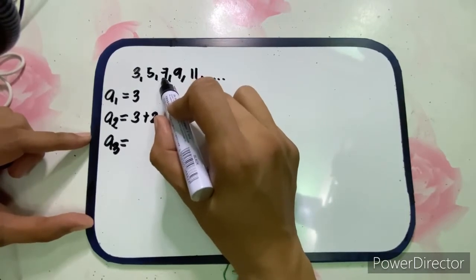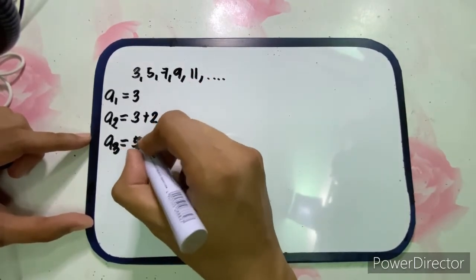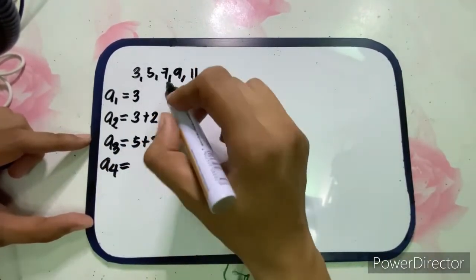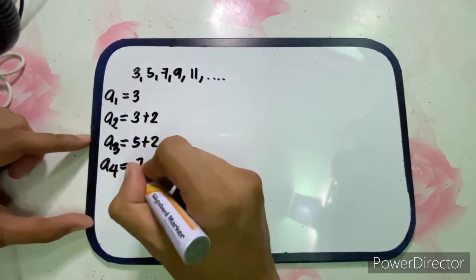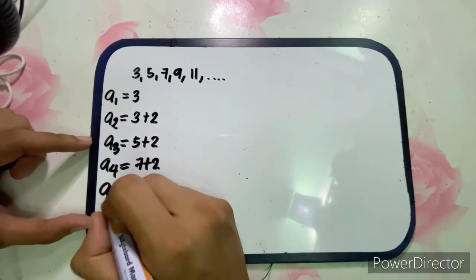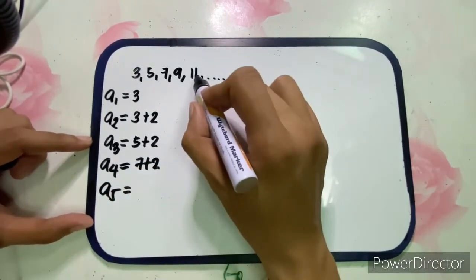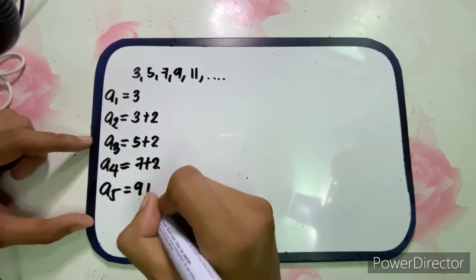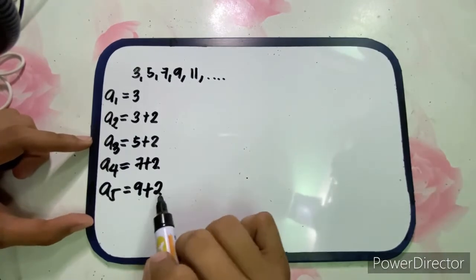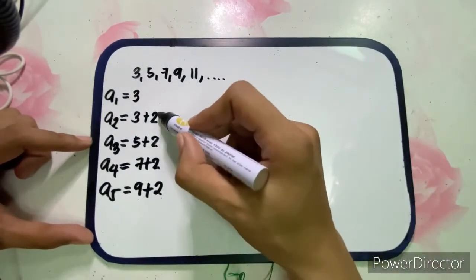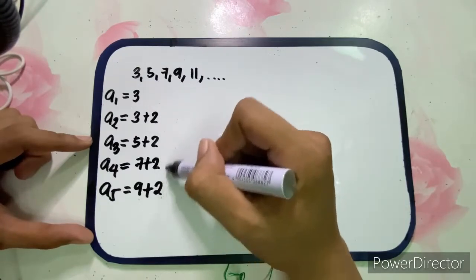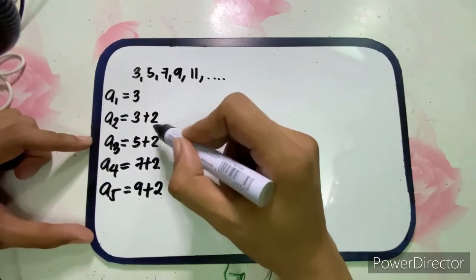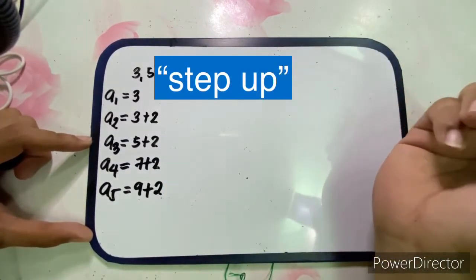A sub 3 is 7 — how did we get 7? So 7 is 5 plus 2. A sub 4 is 9, so 9 is 7 plus 2. Then a sub 5 is 11, the fifth term, and we get 11 by adding 9 and 2. So this 2 is what we call the common difference, or in the recursive formula, the step up.